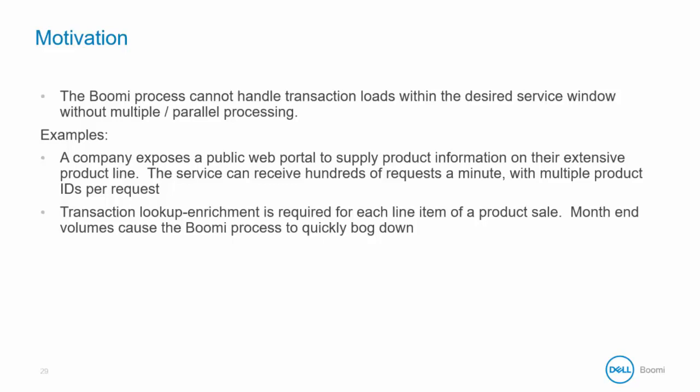The motivation is faster processing time or to handle a large transaction load. For example, a company exposes a public web portal to supply product information on their extensive product line. The service can receive hundreds of requests a minute with multiple product IDs per request. Transaction lookup enrichment is required for each line item of a product sale. Month-end volumes cause the Boomi process to quickly bog down. In this case, the large transaction load can be handled by parallel processing.